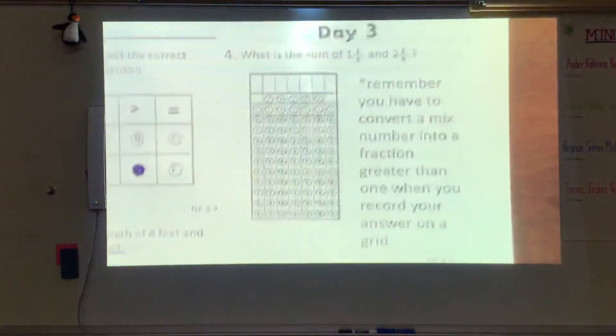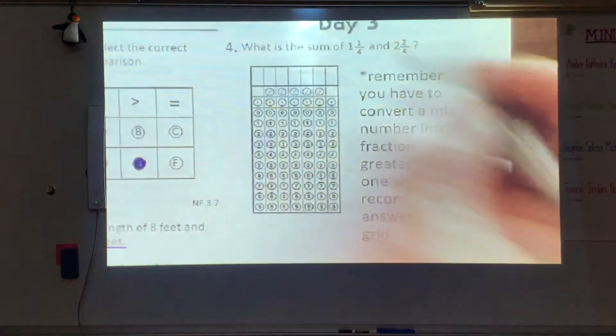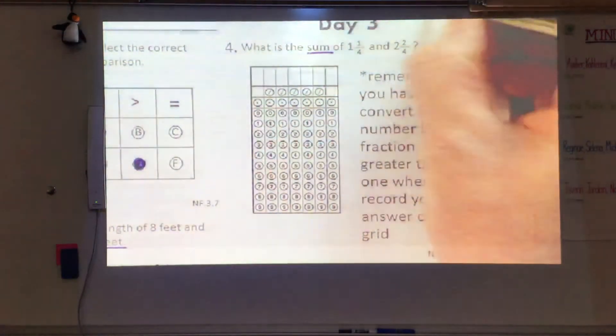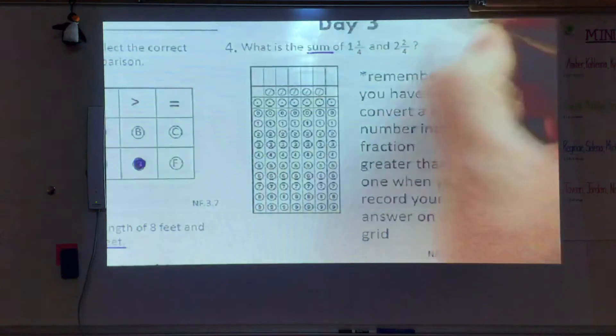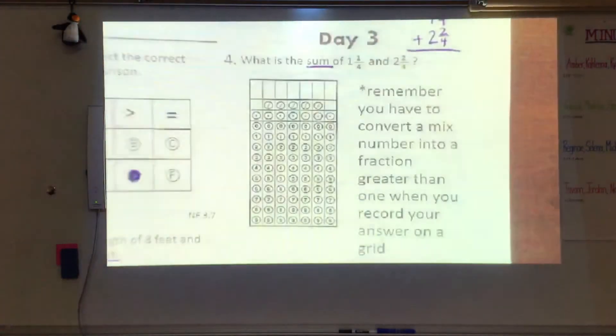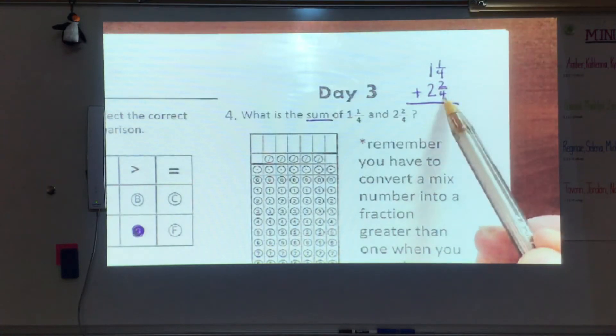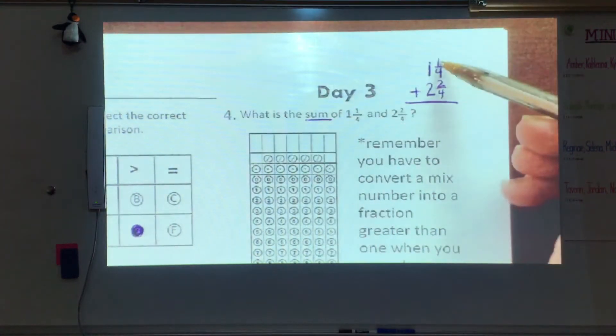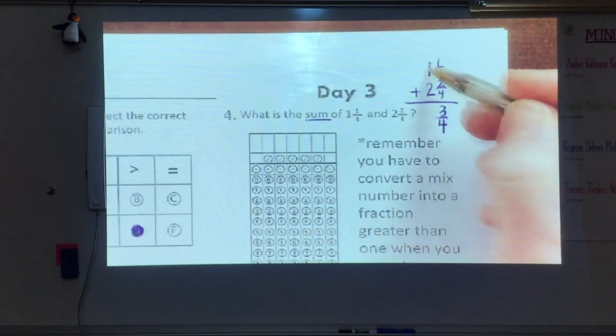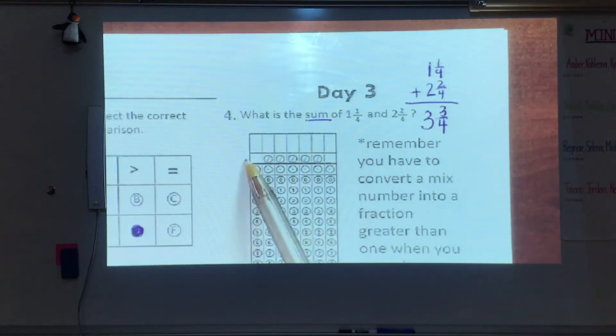We have a grid now. Number four. What is the sum of 1 and 1/4 and 2 and 2/4? Sum tells me I need to add. So we're going to come over here. We're going to do 1 and 1/4 and we're going to do 2 and 2/4. And we are going to add those together. Sorry about that. Right up here. 1 and 1/4 plus 2 and 2/4. I know if I add 1/4 plus 2/4, I get 3/4. And 1 plus 2 wholes is 3 wholes. Now look here. In a grid, we have to convert it.